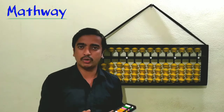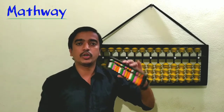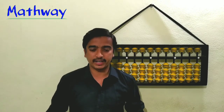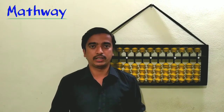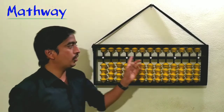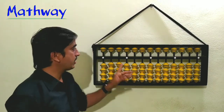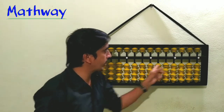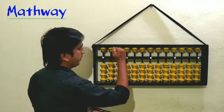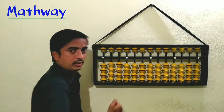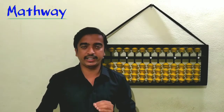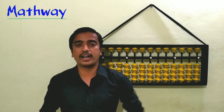Whenever you are using the abacus, you should keep the abacus on the table. When it is placed on the table, there should be no bead in contact with the answer line. All upper beads should be on the upper side and all lower beads should be on the lower side.